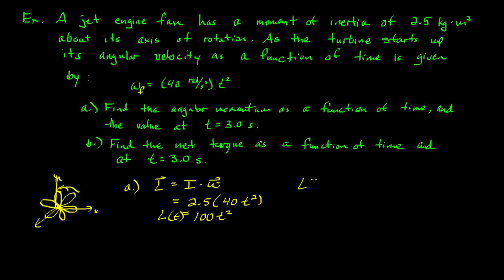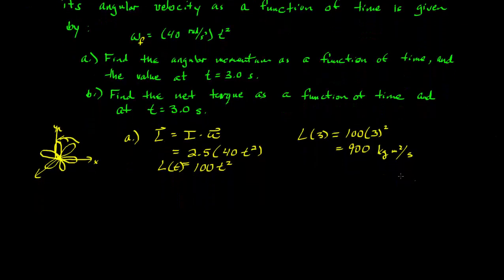To find L at three seconds, substitute t equals 3: L equals 100 times 3 squared equals 100 times 9 equals 900 kilogram meter squared per second. The direction is along the Z axis — pointing out of the screen.